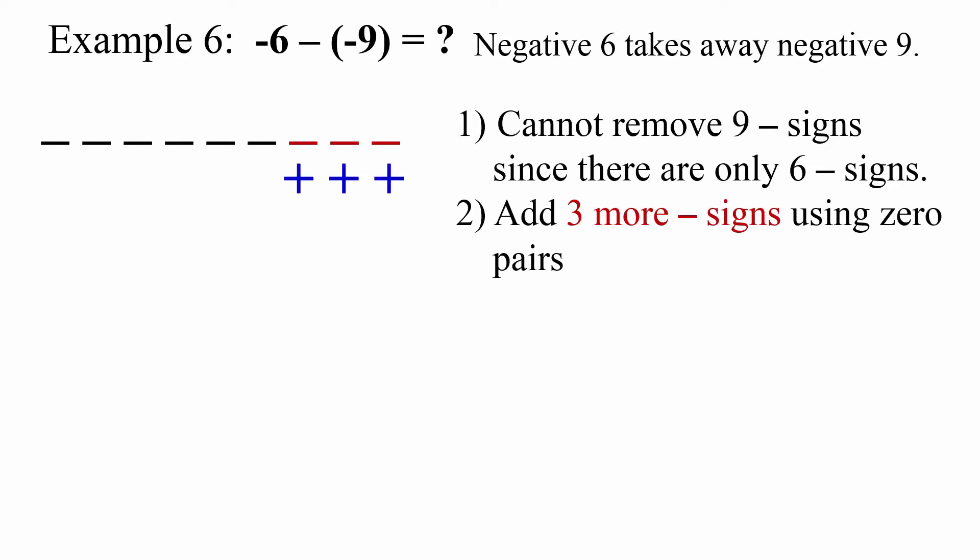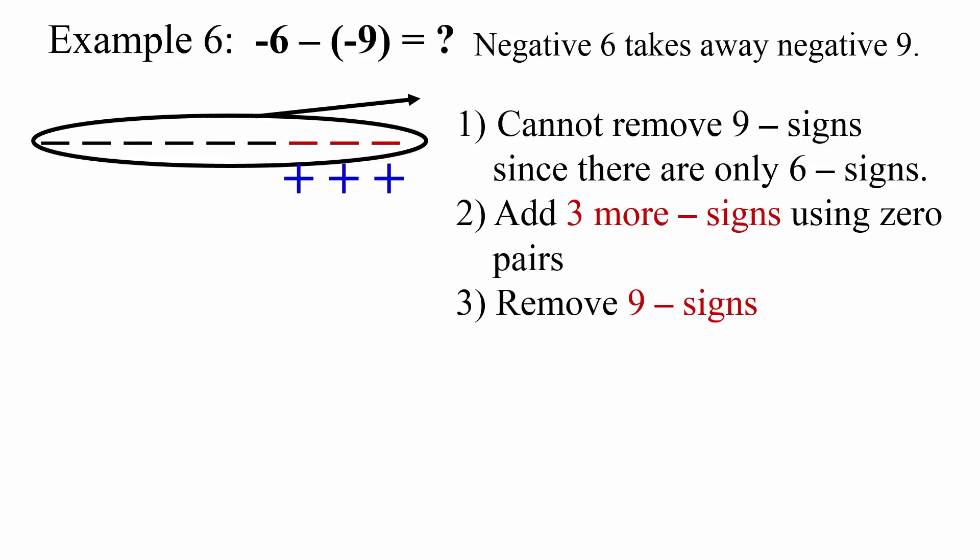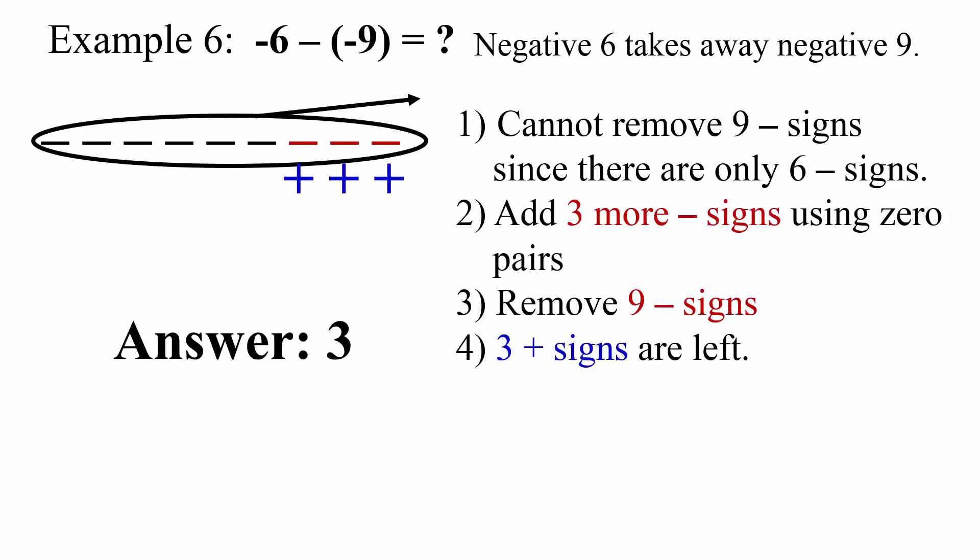I add 3 more negative signs using zero pairs. Then I remove 9 negative. I am left with 3 positive. My answer is positive 3.